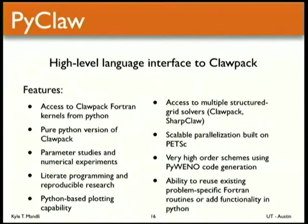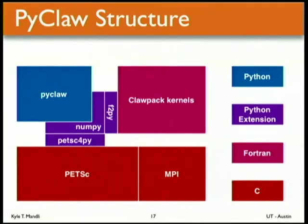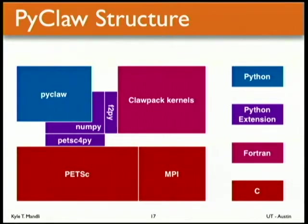A little more about PyClaw — it's basically a high-level language interface to Clawpack, and it's developed by leaps and bounds over the past couple of years. The main point is that it has a structure that isolates all the important pieces. PyClaw sits at the top, talking between the Clawpack kernels — the Fortran Riemann solvers — through F2Py, through NumPy, back through PETSc for Python. PETSc and MPI are included because this code can run on a parallel machine. Going from Fortran, which requires you to explicitly add MPI calls, we developed this so I can drop in my new Python version of the code and run it on a supercomputer.